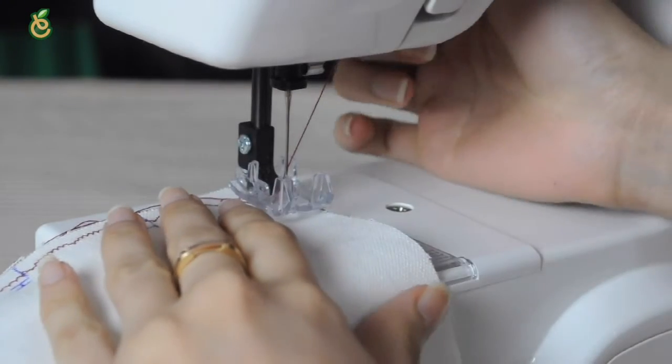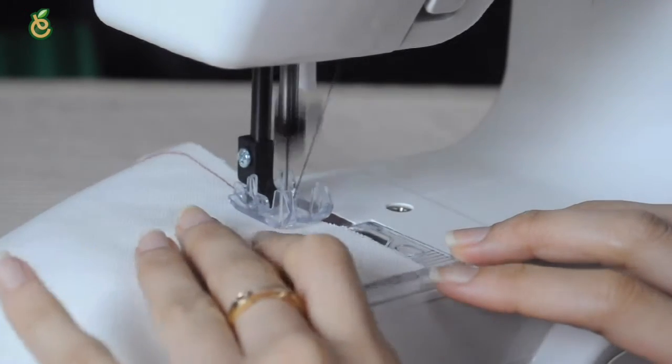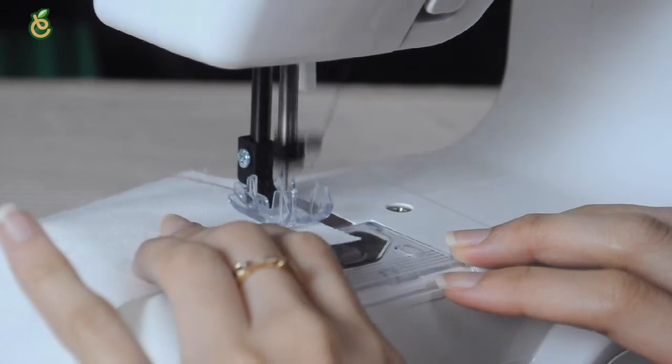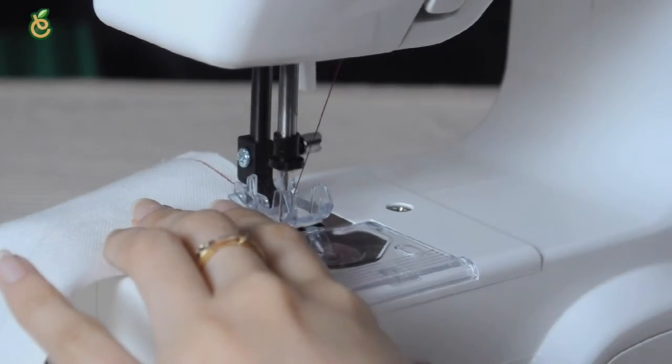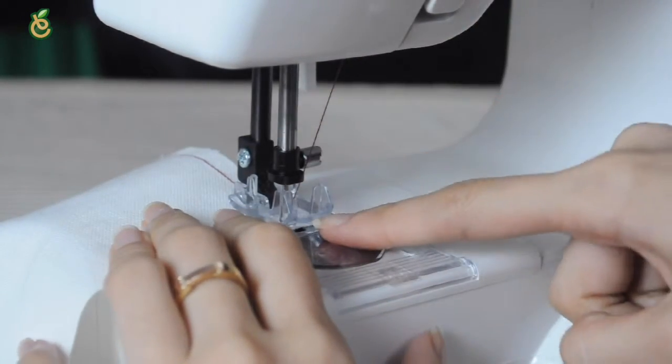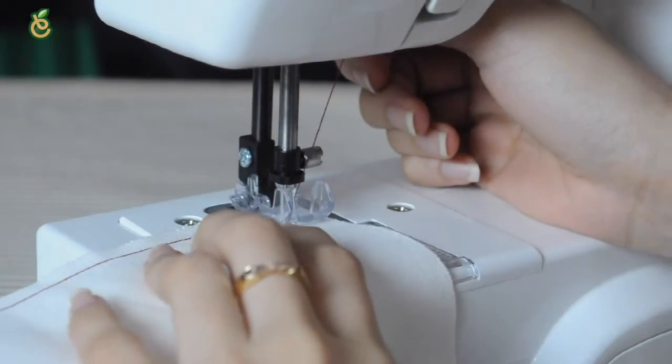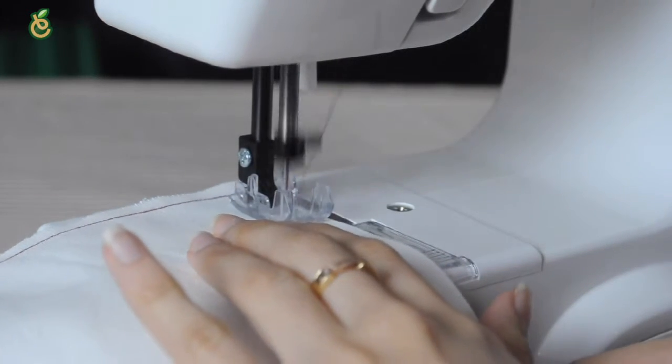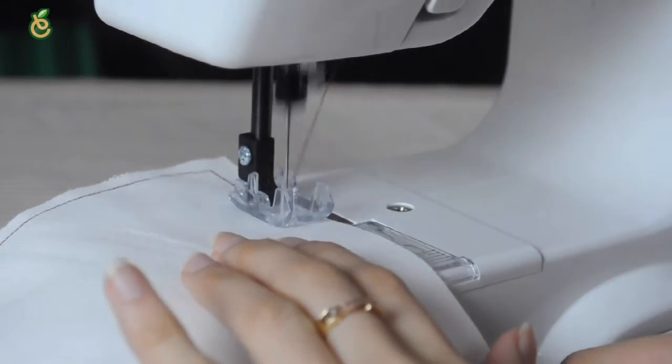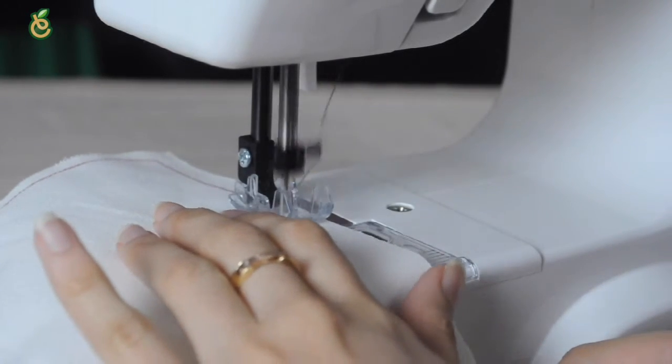Turning a square corner: Stop stitching at the corner of the fabric. Lower the needle by turning the hand wheel counter-clockwise. Raise the presser foot and turn the fabric counter-clockwise 90 degrees. Finally, lower the presser foot and begin stitching in the new direction.